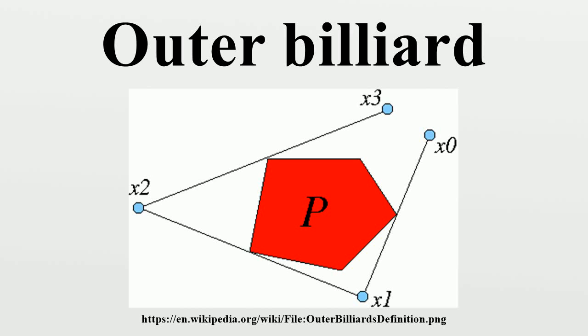Outer billiards is a dynamical system based on a convex shape in the plane. Classically, this system is defined for the Euclidean plane, but one can also consider the system in the hyperbolic plane or in other spaces that suitably generalize the plane. Outer billiards differs from a usual dynamical billiard in that it deals with a discrete sequence of moves outside the shape rather than inside of it.